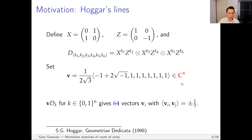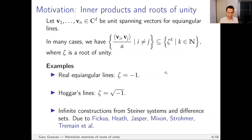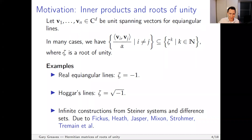These 64 vectors have the special property that the inner product between any distinct pair is equal to plus or minus one-third. This is a complex construction, contrasting with the real construction we just saw. I'm introducing this because I want to get to Hermitian matrices — specifically, Hermitian matrices whose entries are all roots of unity. Instead of considering all possible equiangular line systems, I want to focus on those whose inner products all differ by some multiple of a root of unity.